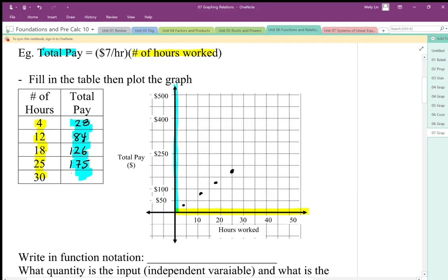30 hours worked, we're going to end up with $210. So $210 is maybe right about there. And again, it looks like our pattern is about right. It's a straight line. And I would assume that if I don't work any hours, I get zero pay. So it looks like it's probably going to go through zero. So there's my pattern. That's what I'm looking for.